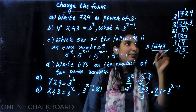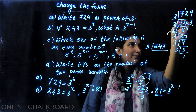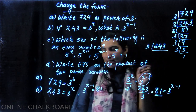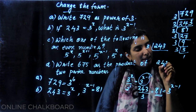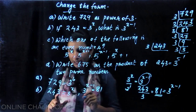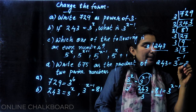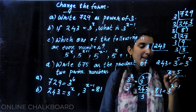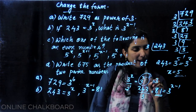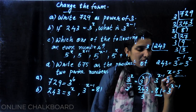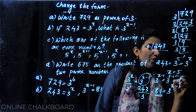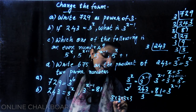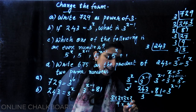We are going to factorize 243. 3 into power: 1, 2, 3, 4, 5 — 5 times. 243 equals 3 raise to 5. So 3 raise to 5 equals 3 raise to x, meaning x equals 5. If x equals 5, then 3 raise to x minus 1 equals 3 raise to 5 minus 1, which is 3 raise to 4. Now 3 raise to 4: 3 times 3 is 9, 9 times 9 is 81. The answer is 81.